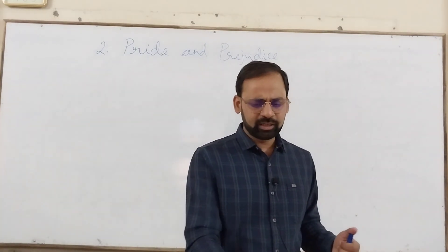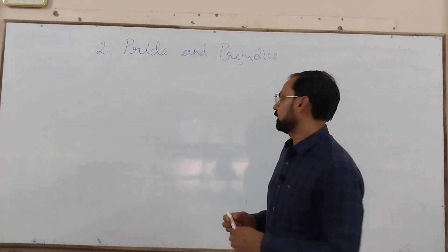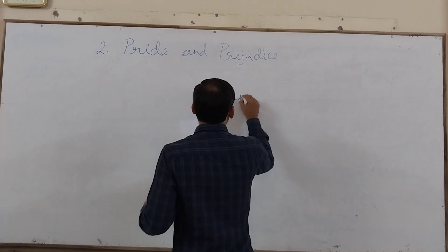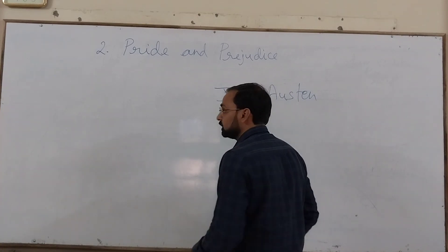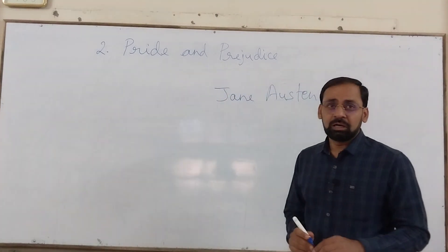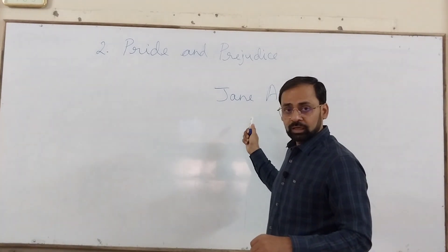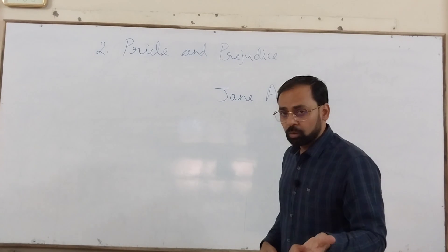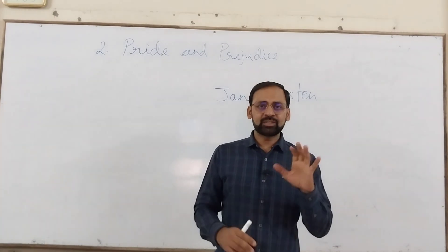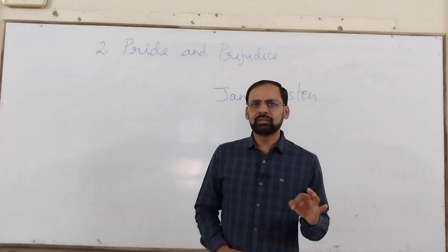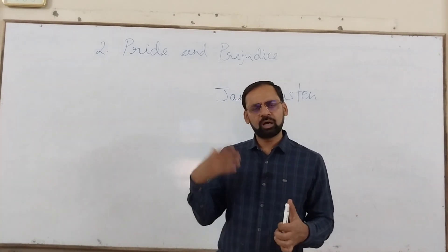Let us talk about the author of the novel Pride and Prejudice — Jane Austen. Jane Austen is such a popular name and is considered one of the greatest English authors. She has not written much in terms of volume; she has written only six novels. Only four of those were published when she was alive, and two were published later after her death.